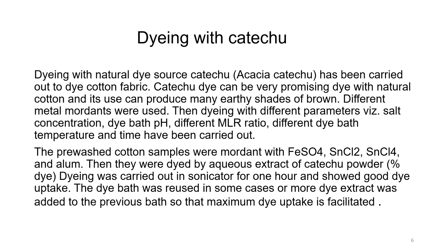The pre-washed cotton samples were mordanted with ferrous sulphate, stannic chloride, stannous chloride, and alum. They were then dyed by aqueous extract of catechu powder at 6 to 10 percent concentration. Dyeing was carried out in a sonicator for an hour and showed good dye uptake. The dye bath was reused in some cases, and more dye extract was added to the previous dye bath so that maximum dye uptake is facilitated. Sonicator dyeing is faster and gives better effectivity than conventional dyeing.